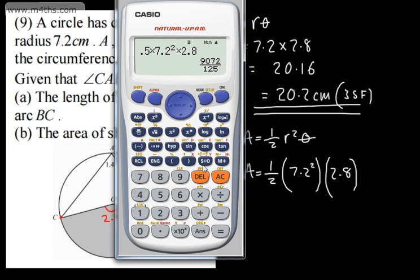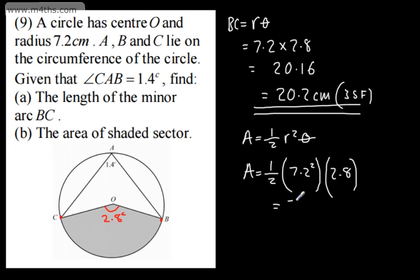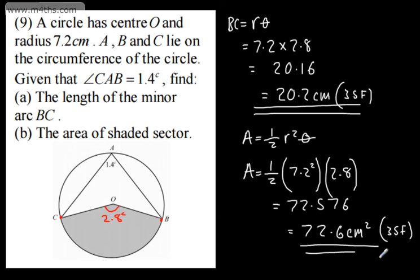That's going to give us 72.576. So we'll say this is going to be 72.6 centimetres squared, again correct to three significant figures. Two relatively straightforward questions once we can access them by using circle theorem.